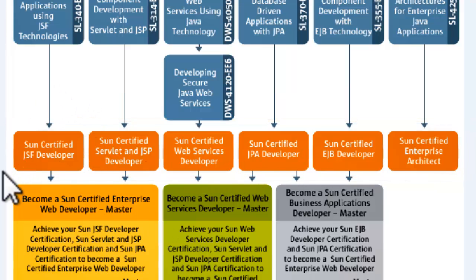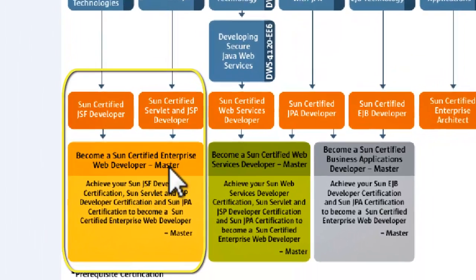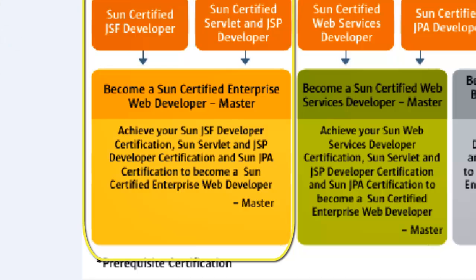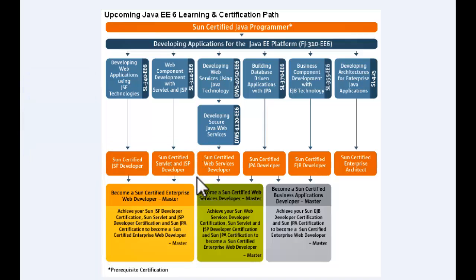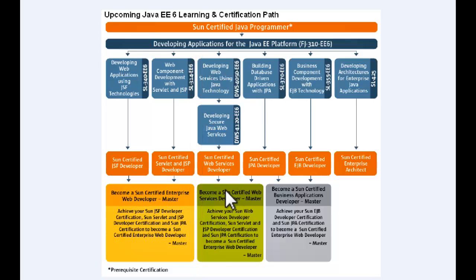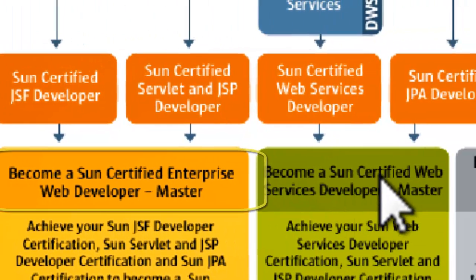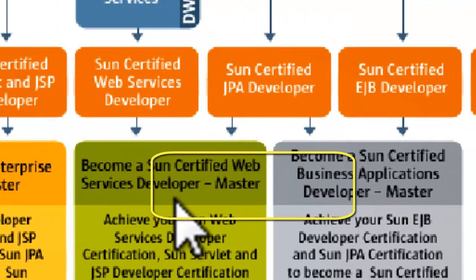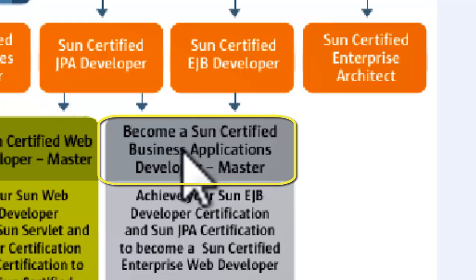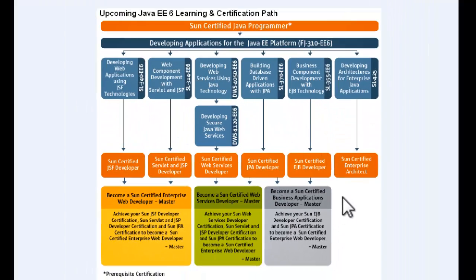If you combine two of these you can then become a Master. So it goes down the way: Programmer, Developer, Master. But going across the way it's slightly different — there's a gap here. That means these people really aren't the same as these others. So this Master isn't the same as this guy here. This guy is an Enterprise Web Developer, whereas this guy is a Web Services Developer, which is a different thing.